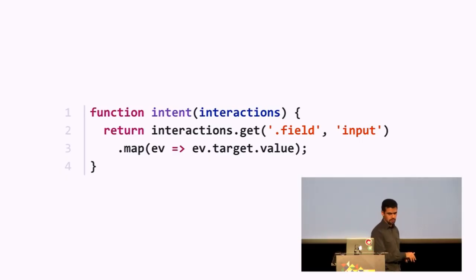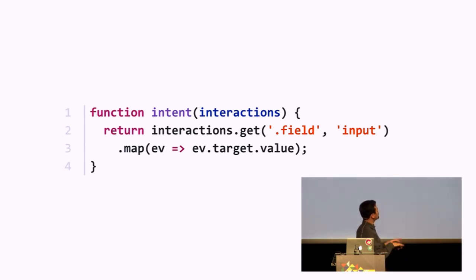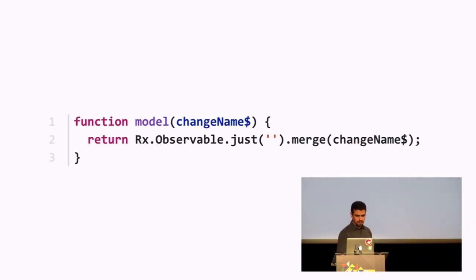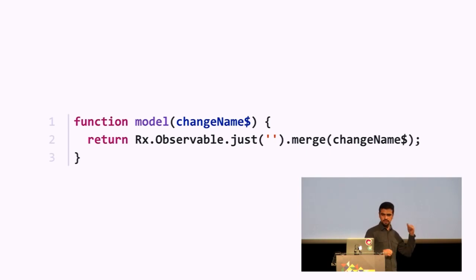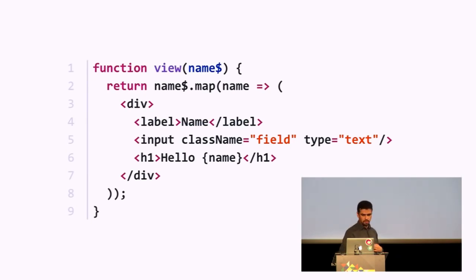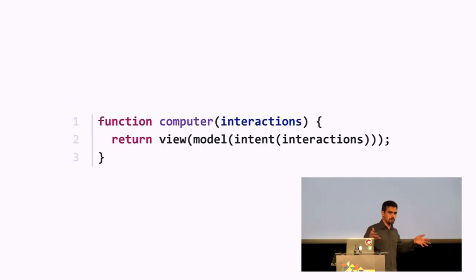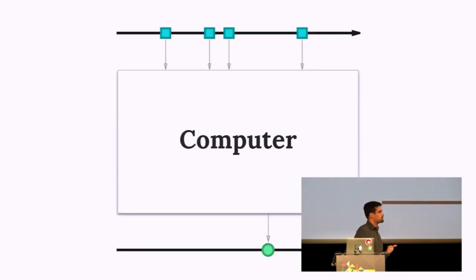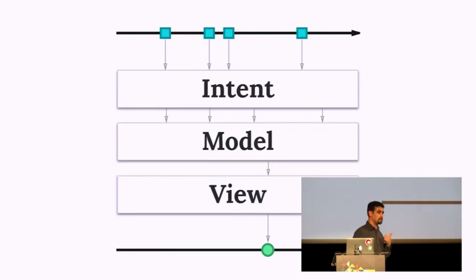The intent takes care of interpreting whatever the user is trying to do — wrapping the parts that get an input event on that field and read the value inside. The model takes change name stream from intent and makes sure it starts with some initial data. The view converts the model's name stream into divs. Finally, the computer is just function composition of these three. You choose: you can do it all in one function, or split it — it's up to you as the programmer.